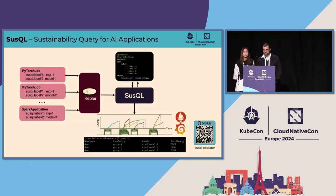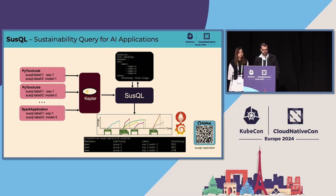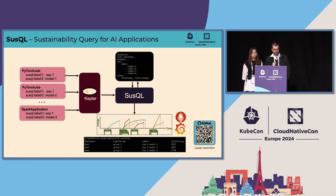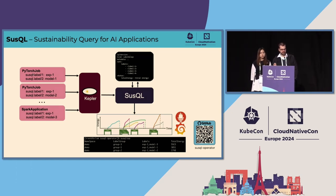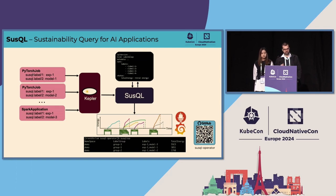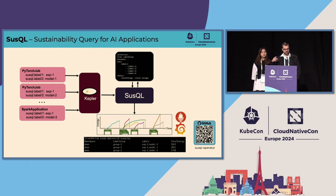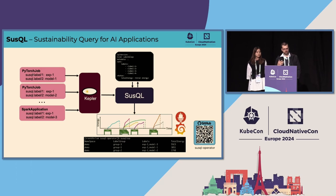The key part of SUSQL is that, for example, in Kepler we aggregate energy per container and pod. But users want to aggregate energy for different executions — different AI workloads that have multiple pods and multiple jobs. To aggregate that over the lifetime of the application across different training runs, we can use labels to aggregate the energy consumption based on those labels.